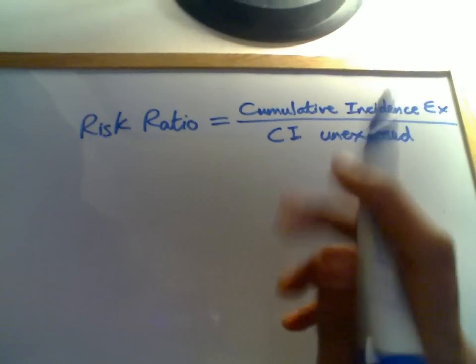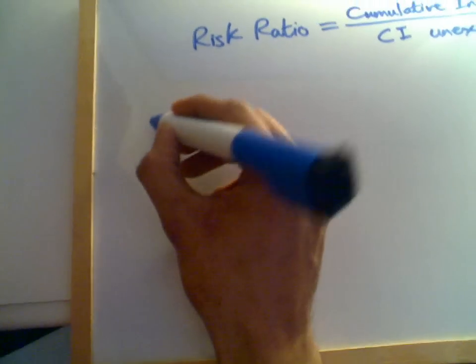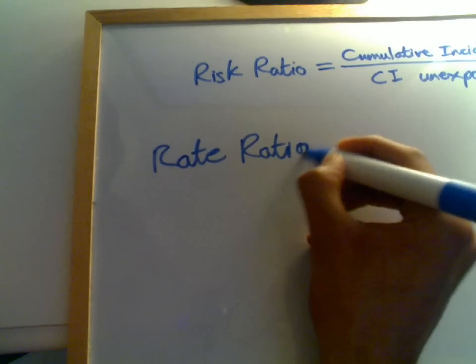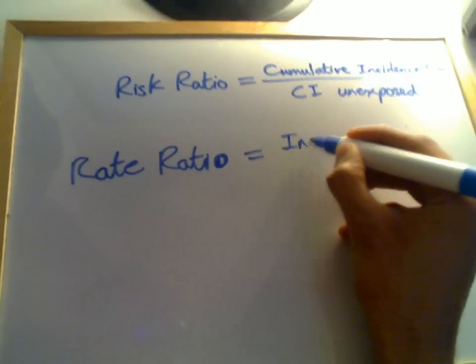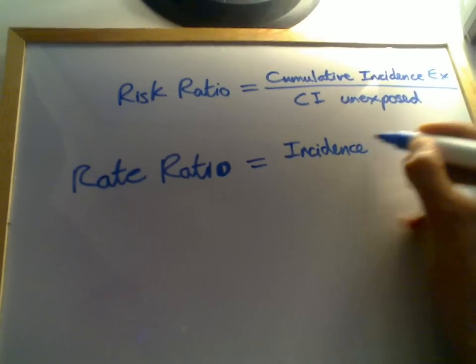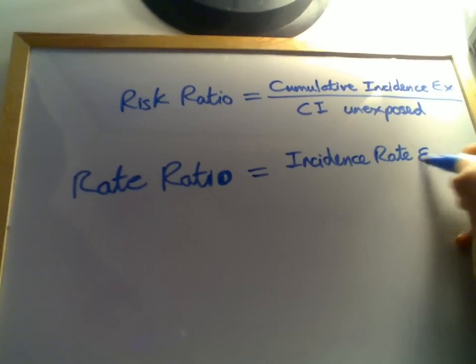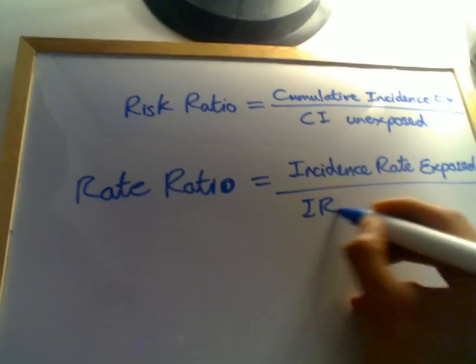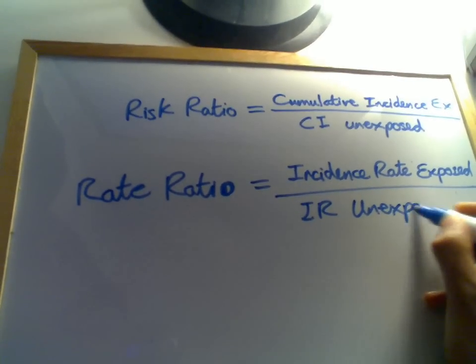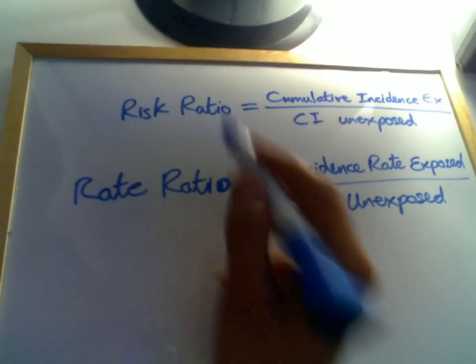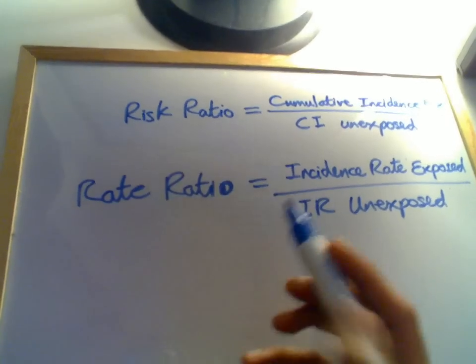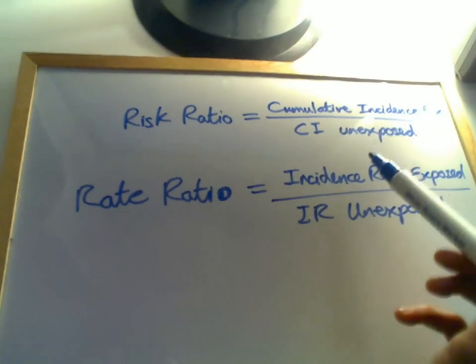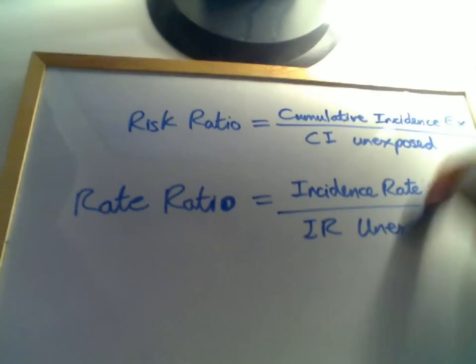So straight away you can figure out that's what risk ratio is. If someone said to you rate ratio, you would instinctively know that was incidence rate in the exposed over incidence rate in the unexposed. And so on and so forth. These are types of relative risk: risk ratio and rate ratio. Another one's odds ratio, so you'd know odds ratio would be odds in exposed over odds in unexposed. So basically you'd know how to work everything out.